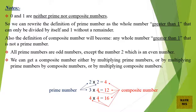We can get a composite number either by multiplying prime numbers, or by multiplying prime numbers by composite numbers, or by multiplying composite numbers. For example: 2 × 2 = 4 (2 is prime, 4 is composite); 3 × 4 = 12 (3 is prime, 4 and 12 are composite); 4 × 4 = 16 (4 and 16 are composite).